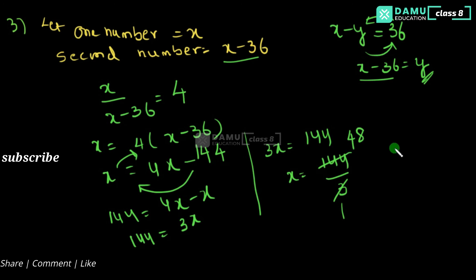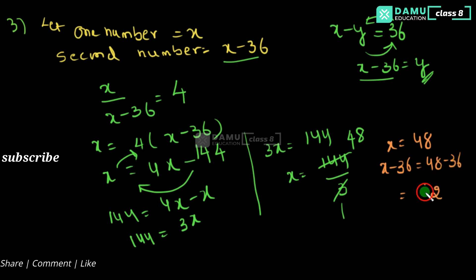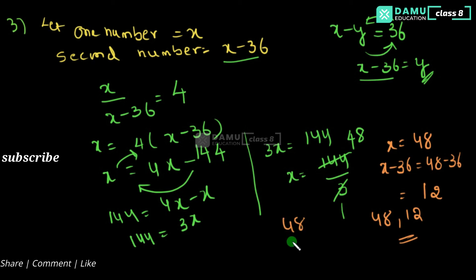So x equals 48, and the other number x minus 36 equals 48 minus 36 equals 12. So the two integers are 48 and 12. Verification: the difference 48 minus 12 gives 36, and the quotient 48 divided by 12 gives 4. Thanks for watching, please subscribe.